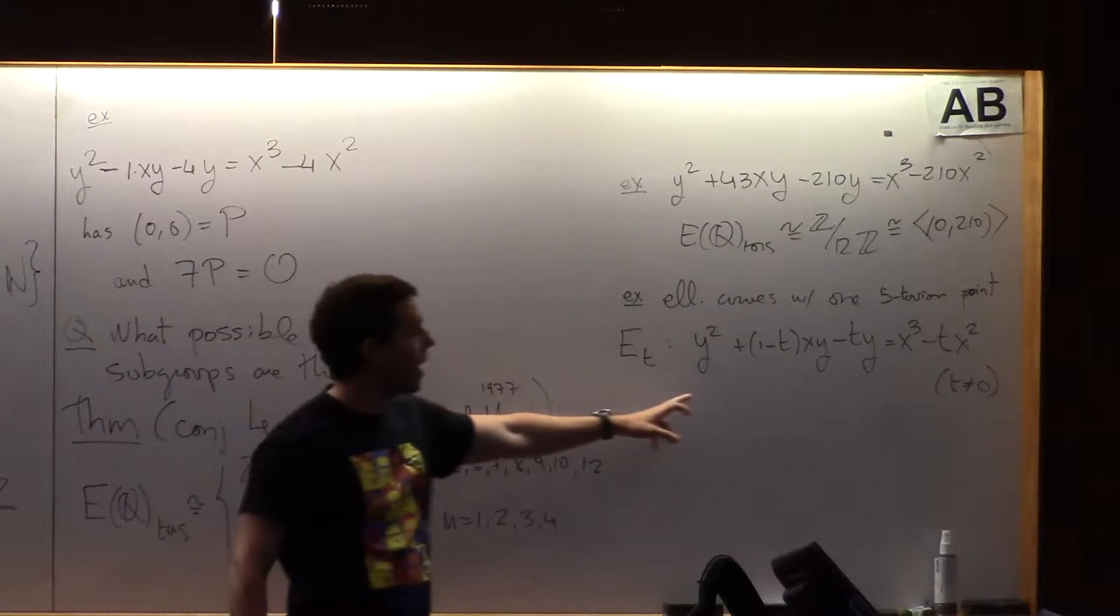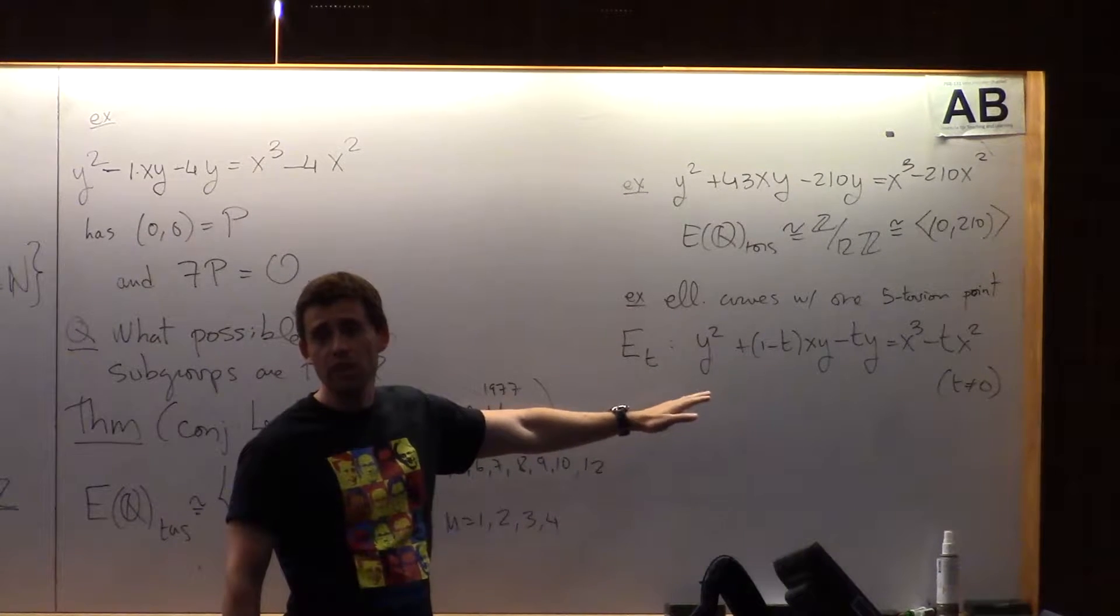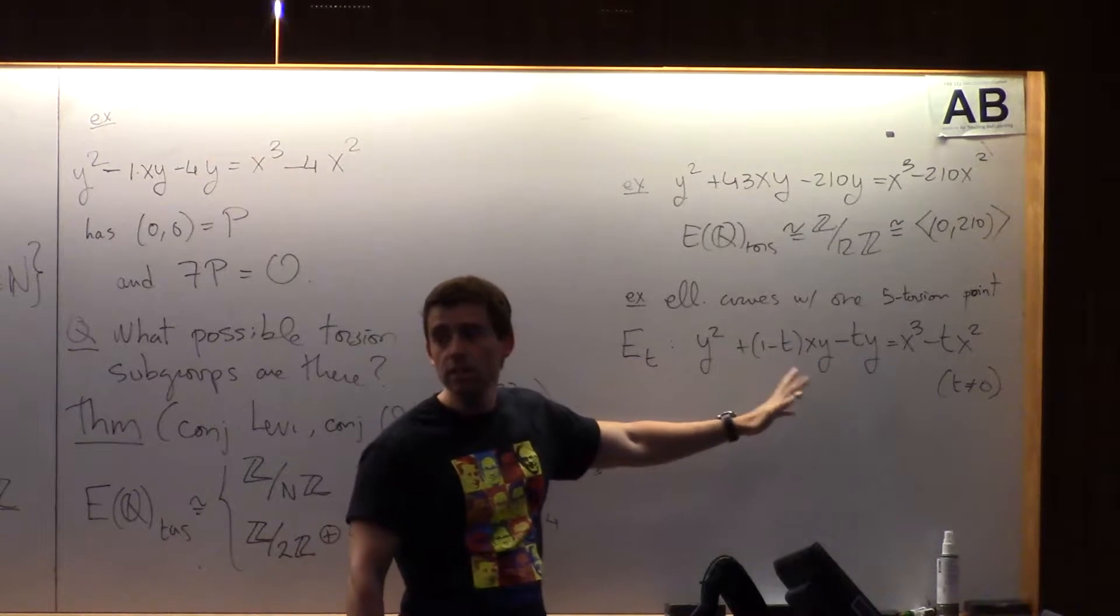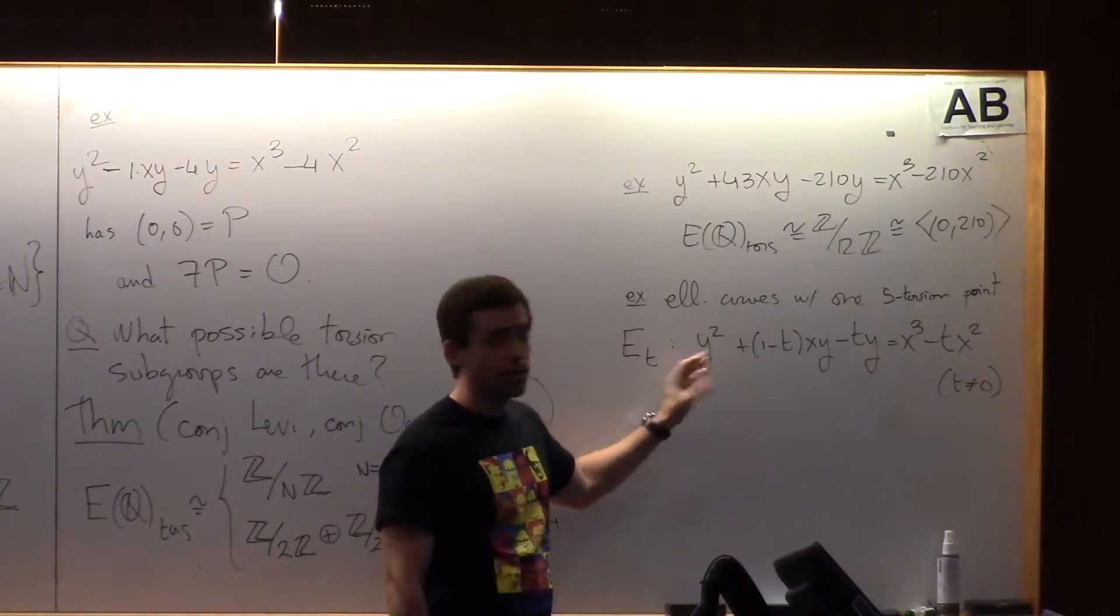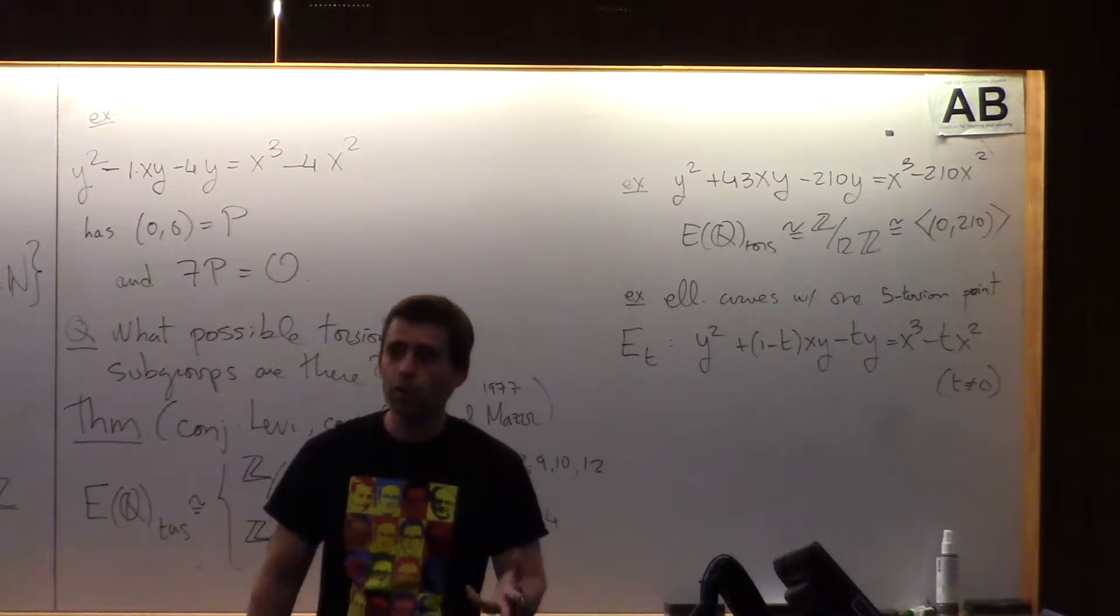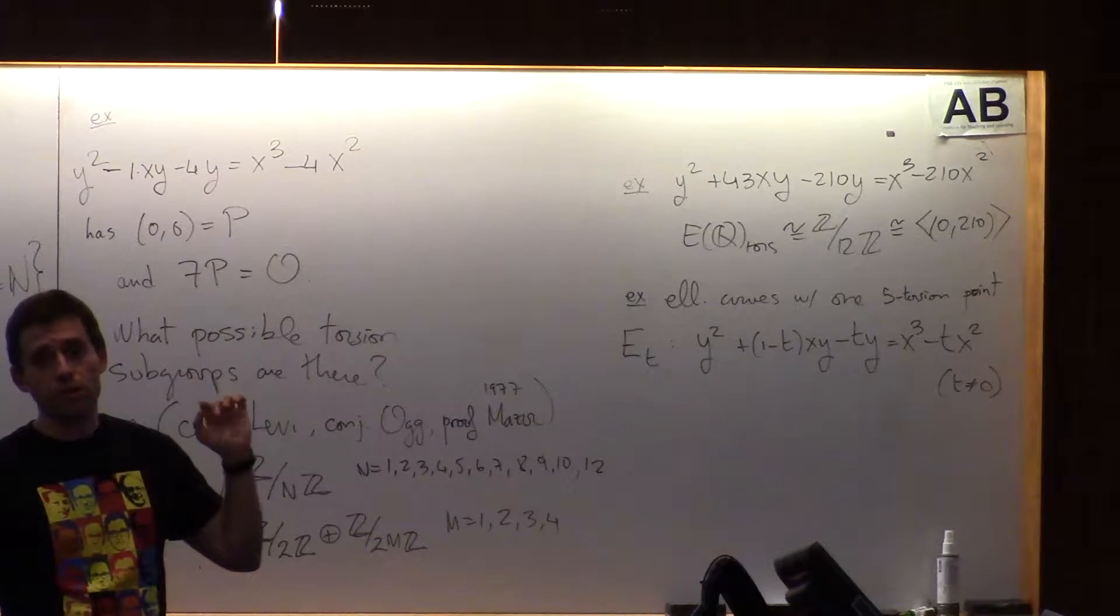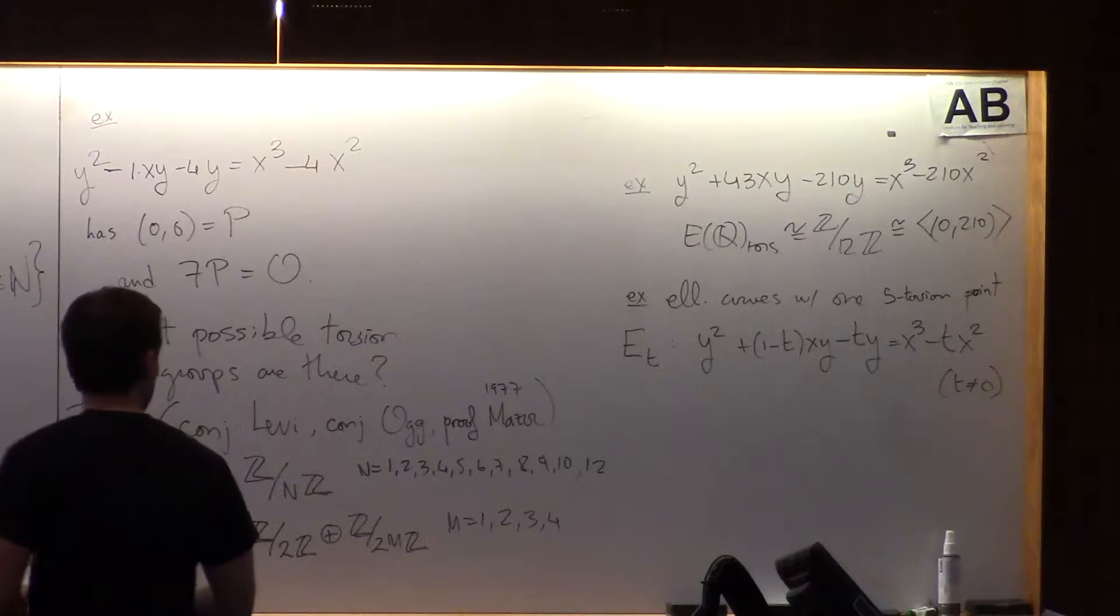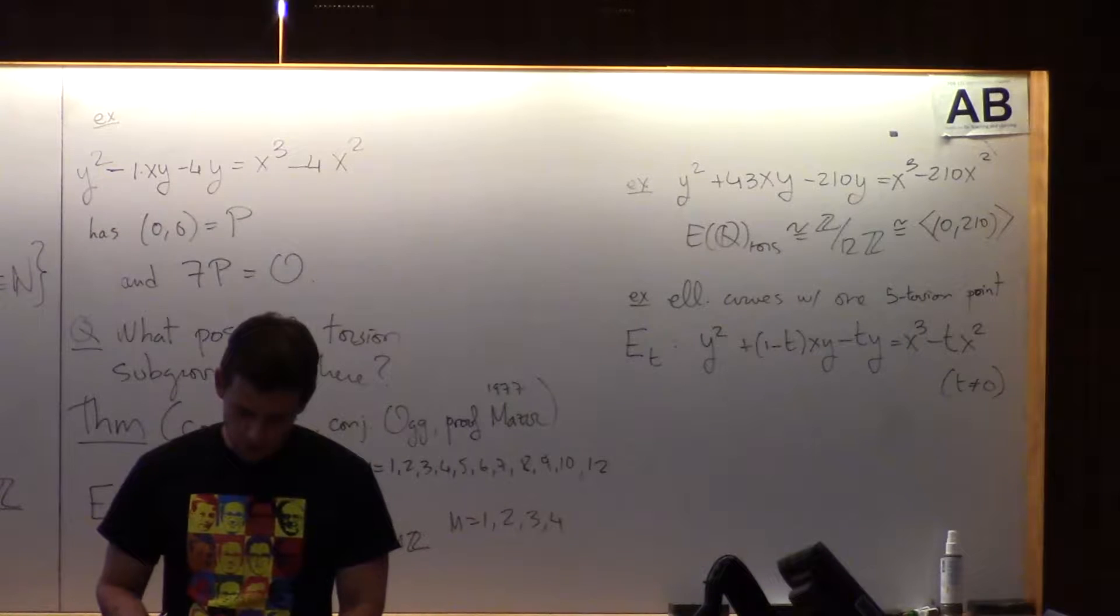By the way, this shows why we choose to not put all the curves in short Weierstrass form. In this longer Weierstrass form, the coefficients are pretty nice. If you try to force everything into short Weierstrass form, the coefficients are horrendous. And if you work in characteristics two and three, then not all elliptic curves can be put in short Weierstrass form, so you have to use one of these.